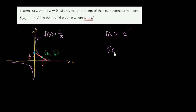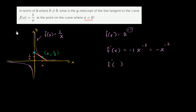The derivative of f at any point x is going to be equal to — the exponent here is negative 1, so negative 1 times x to the negative 2 power. Or I could say it's negative x to the negative 2. What we care about is the slope when x equals k. So f prime of k is going to be equal to negative k to the negative 2 power, which is equal to negative 1 over k squared. This right over here is the slope of the tangent line at that point.